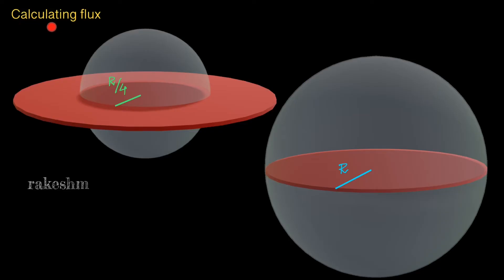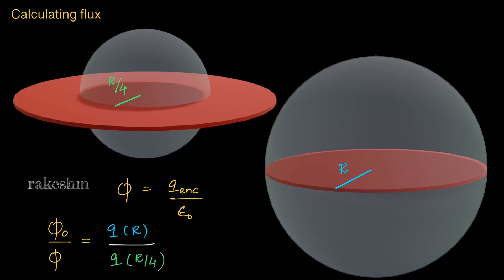Let us calculate the flux through each of these spheres. The flux equals the charge enclosed divided by epsilon_0, so flux is proportional to the charge enclosed. phi_0 by phi equals the total charge on the disk, which we write as q(R), divided by the charge on the part of the disk enclosed by the smaller sphere, which we write as q(R/4).